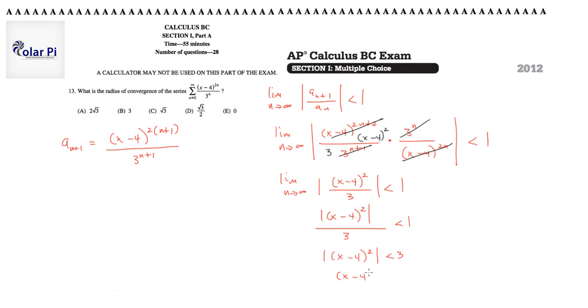So I get x minus 4 squared is less than 3. And clearly, this says that x minus 4 is less than root 3 and greater than negative root 3.